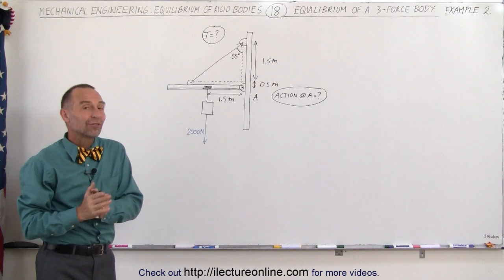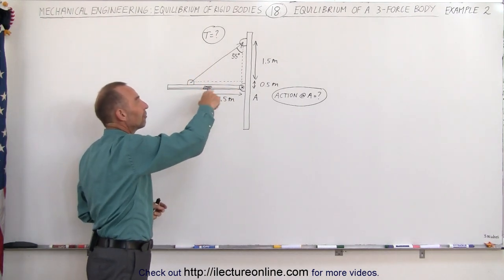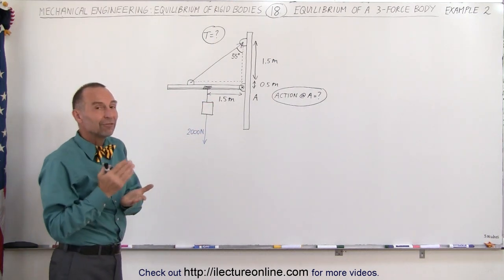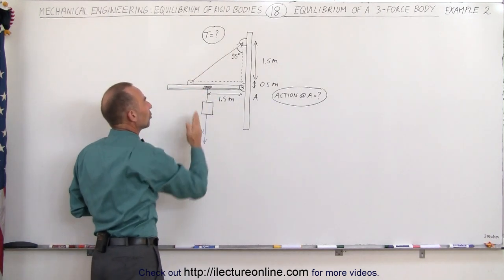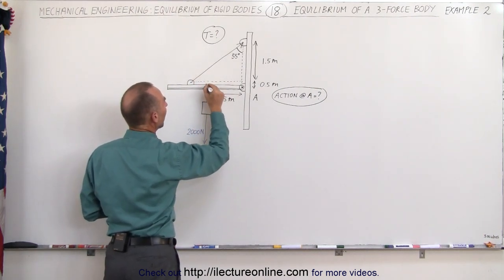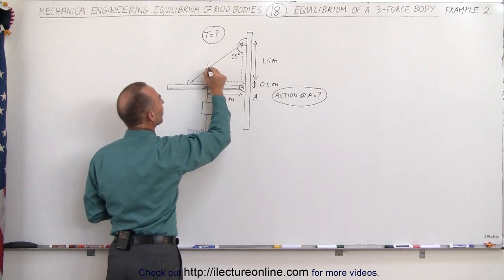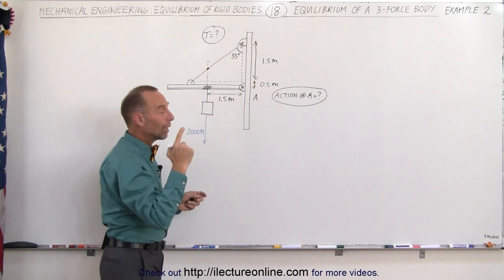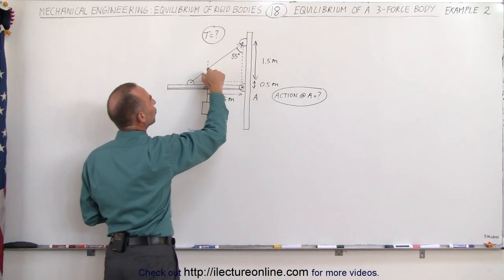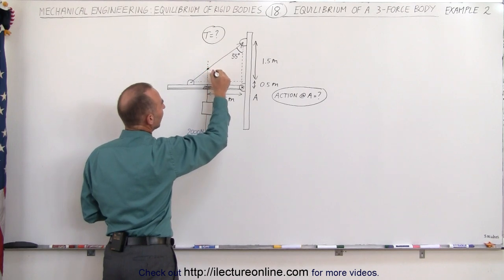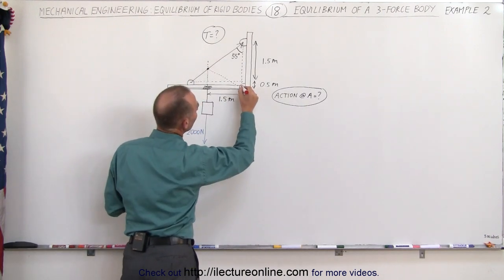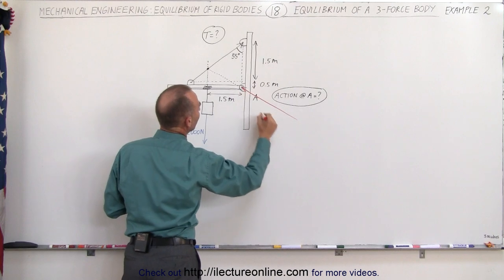The first thing we want to do is find the direction of the action at point A, and then we can solve for the magnitude of the tension and the magnitude of the action. To find the direction of the action at point A, we need to find where the line of action of the tension crosses the line of action of the weight of the crate. Drawing this line of action of the weight upward until it meets the line of action of the tension tells us that the direction of the action at A must be directed toward where those two lines meet. So the force at A must be acting in that direction.